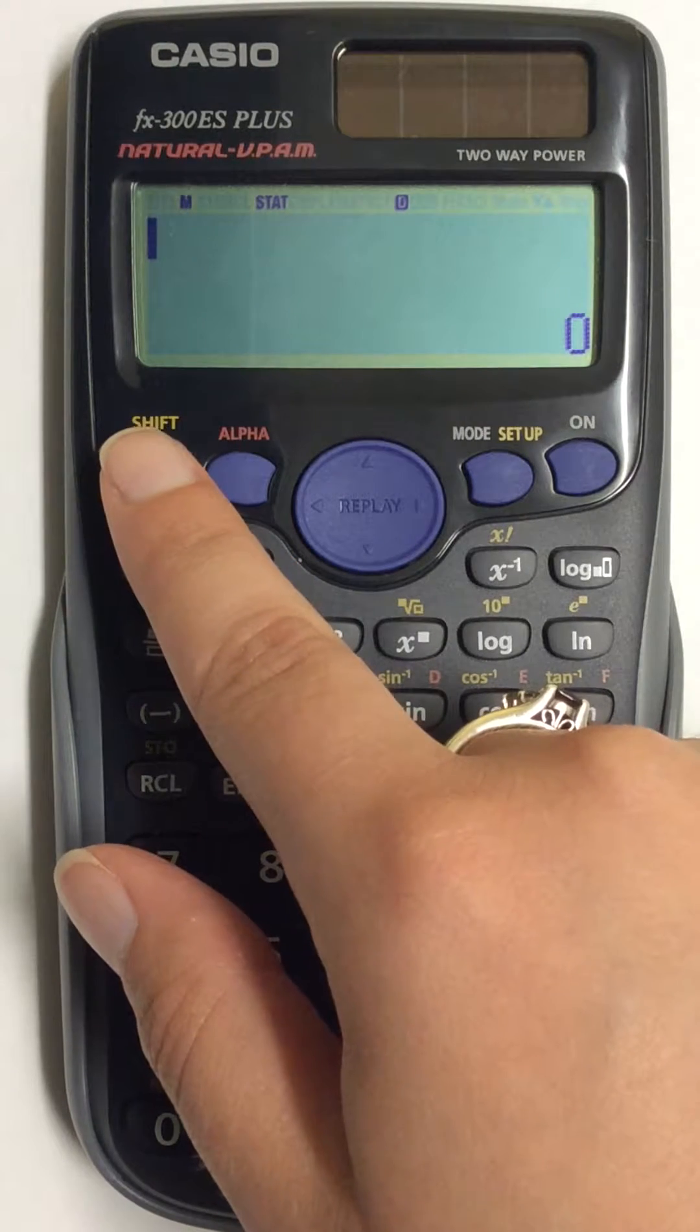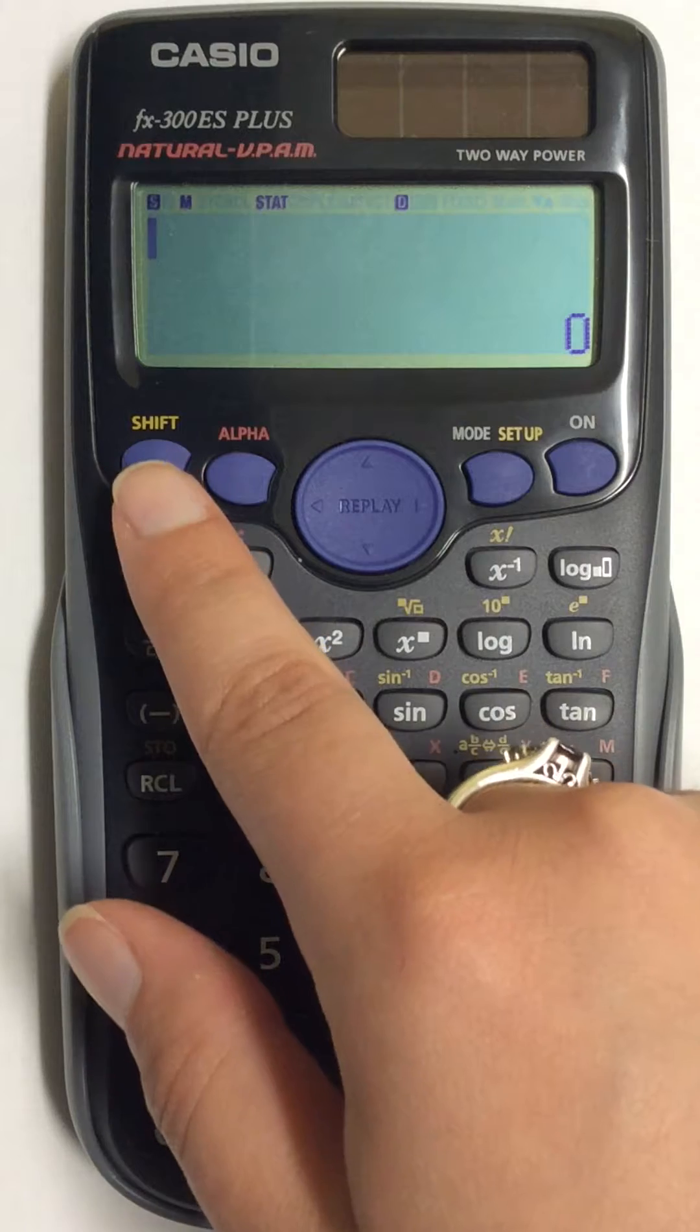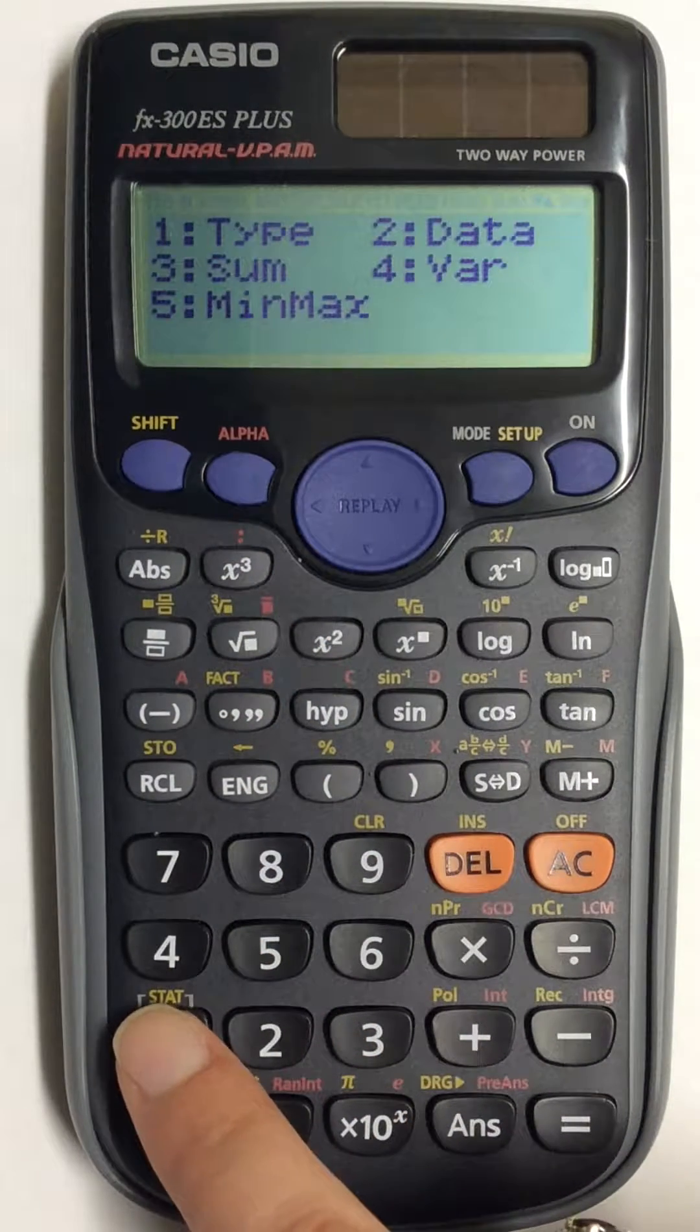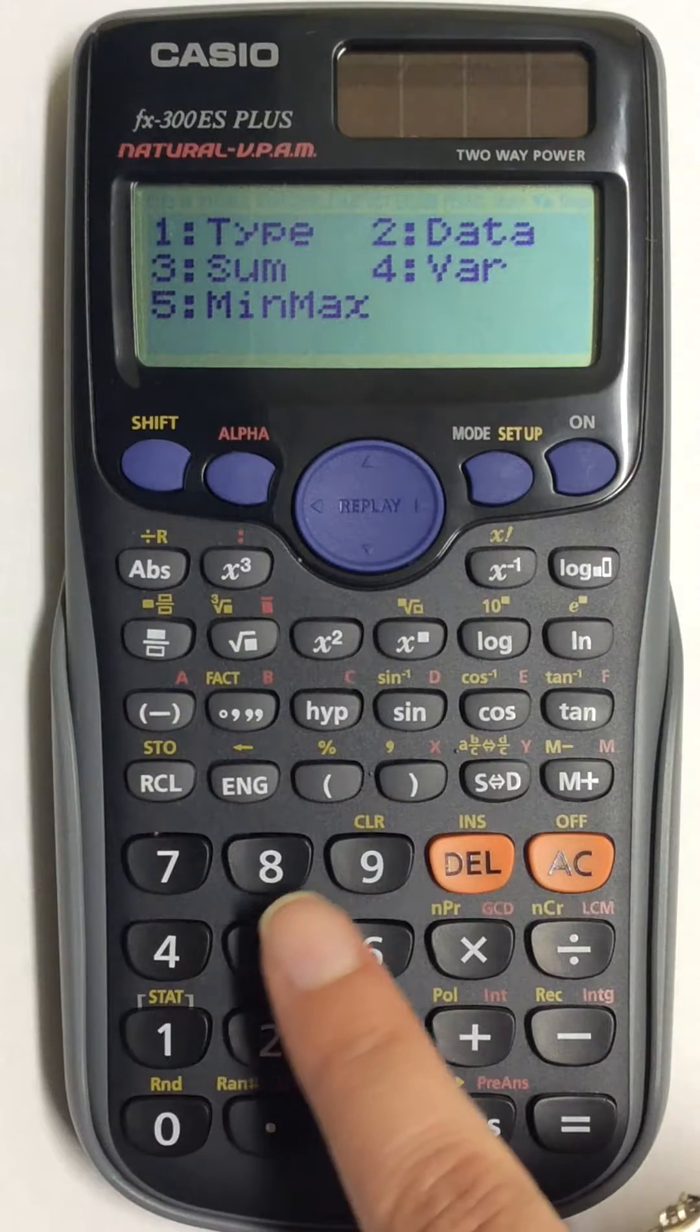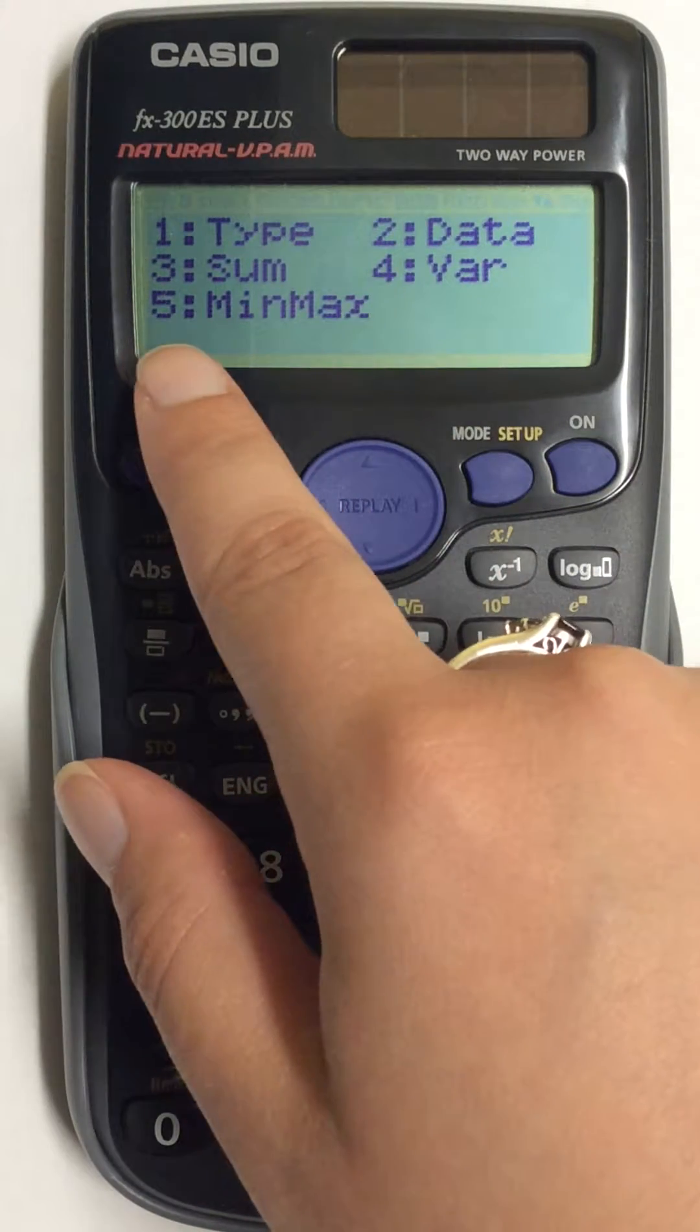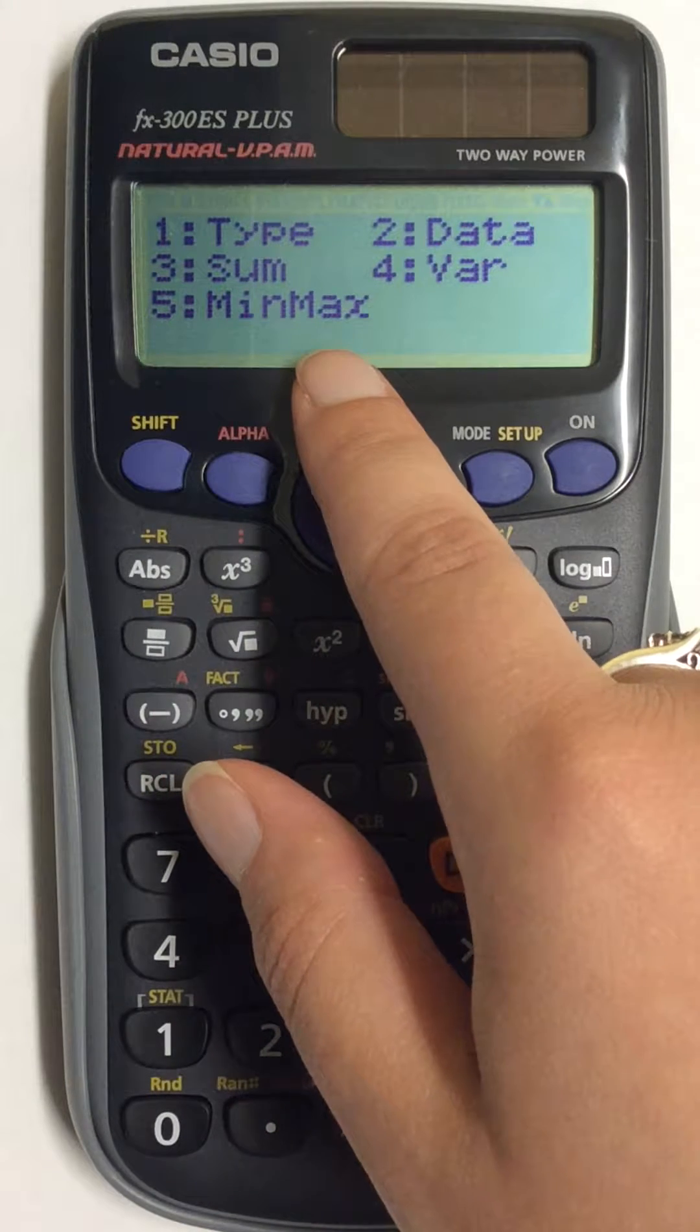Next, I'm going to press the Shift button and come down here to number 1, which says Stat. Next, the option you want to choose is number 5, which says Min Max.